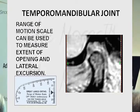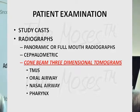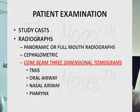Patient exam consists of study casts and radiographs. A panoramic gives you a lot of good information. I don't think everybody has to buy a cone beam CT — but when we do use cone beam, we look at the TMJs, the oral airway, the nasal airway, and the pharynx.